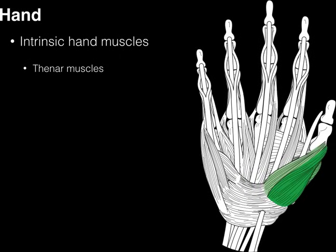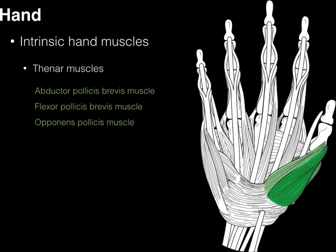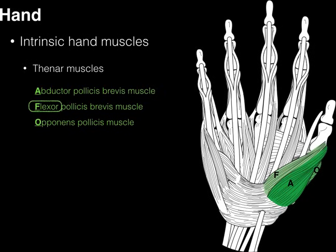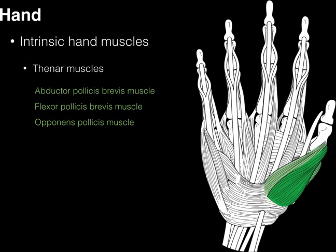Let's start with the thenar muscles. Thenar muscles are muscles that act on the thumb, and there are three of them: abductor pollicis brevis, flexor pollicis brevis, and opponens pollicis — abbreviations AFO on the thumb muscles. The main thing is to recognize the actions: we have an abductor of the thumb, a flexor of the thumb, and an opposer of the thumb. Opponens pollicis — think thumb touching pinky — fine dexterity of the thumb, like buttoning your collar, grabbing a hammer, shaking a hand.